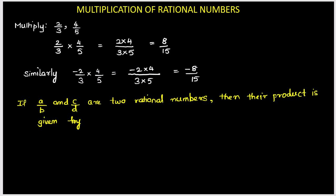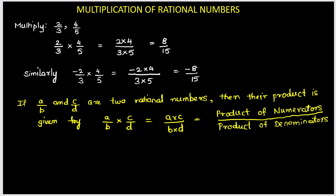So we can generalize in this way. If A by B and C by D are two rational numbers, then the product is given by A by B, the first rational number, multiplied by C by D. So this can be written as A multiplied by C upon B multiplied by D. So that we can say product of numerators upon product of denominators.